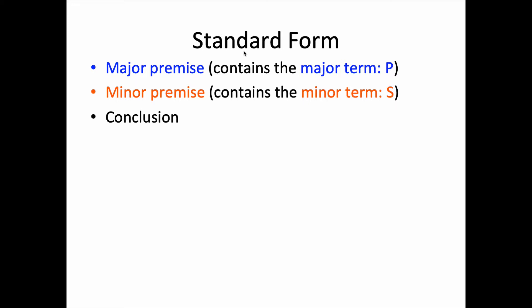This is the order in which these elements appear. For a more detailed discussion of the major premise and the major term, the minor premise and the minor term, please see the videos 'What are the Terms of a Syllogism' and 'What are the Major and Minor Premises in a Categorical Syllogism?'